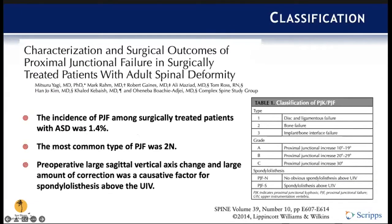Moving on to classification, there's a main classification system proposed by Yagi et al. They initially proposed a system in 2011 describing Type 1 as disc and ligamentous failure, Type 2 as bone failure, and Type 3 as implant-bone interface failure, with grade reflecting increasing levels of kyphotic angle. In 2014, the same group modified the system to add spondylolisthesis, as failures with neurologic abnormalities were more likely to have spondylolisthesis.